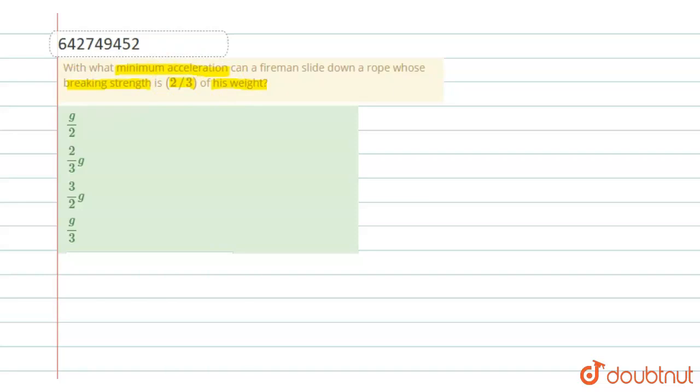So in this question, we have to find the minimum acceleration. So first of all, let's assume this is a rope and the rope will break if tension is greater than breaking strength.